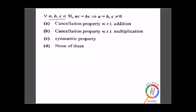The question is given that A, B, C belong to real numbers, AC is equal to BC implies A is equal to B, and C is not equal to zero. This is because in multiplication we have AC and BC, this is a property of multiplication which is the cancellation property with respect to multiplication. So B is the answer.